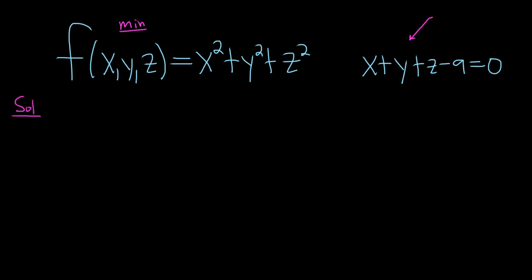When you're using the method of Lagrange multipliers you have to start by solving the following equations. We have the gradient of f(x,y,z) is equal to lambda times the gradient of g(x,y,z).